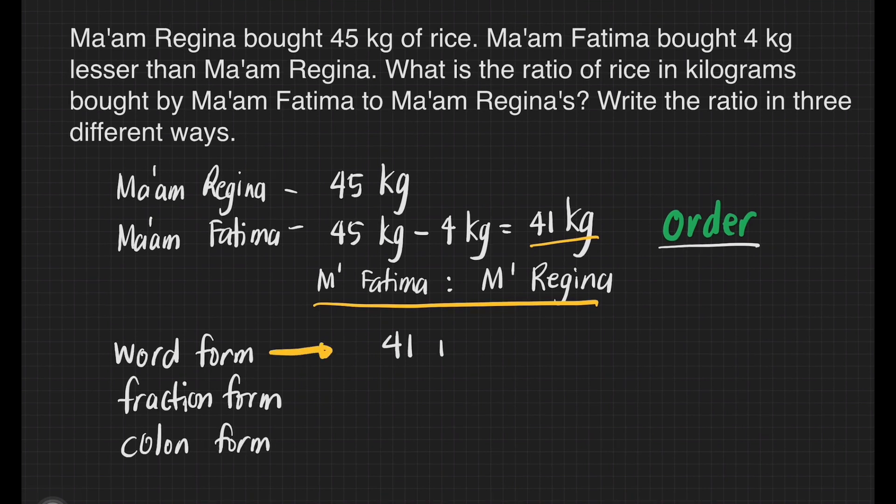For the word form, that's going to be 41 is to 45. For the fraction form, that's 41 over 45. And for the colon form, that's 41 is to 45. And we're done.